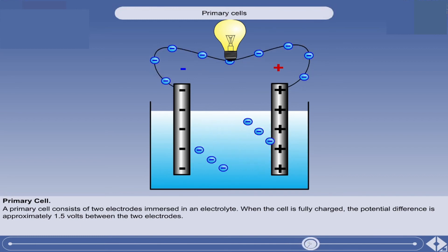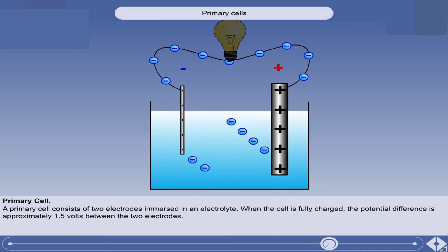As this circulation of electrons continues, the negative electrode slowly dissolves in the electrolyte.